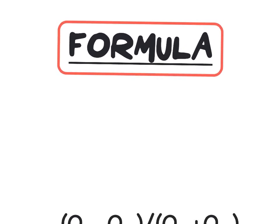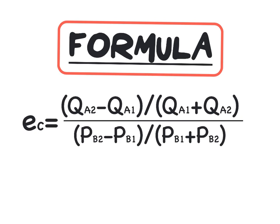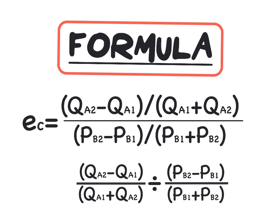In order to calculate our cross-price elasticity of demand we will use the following formula. In this video we will use our arc formula to calculate cross-price elasticity. EC, which is our elasticity coefficient, will be equal to the quantity of product A divided by the price of product B.